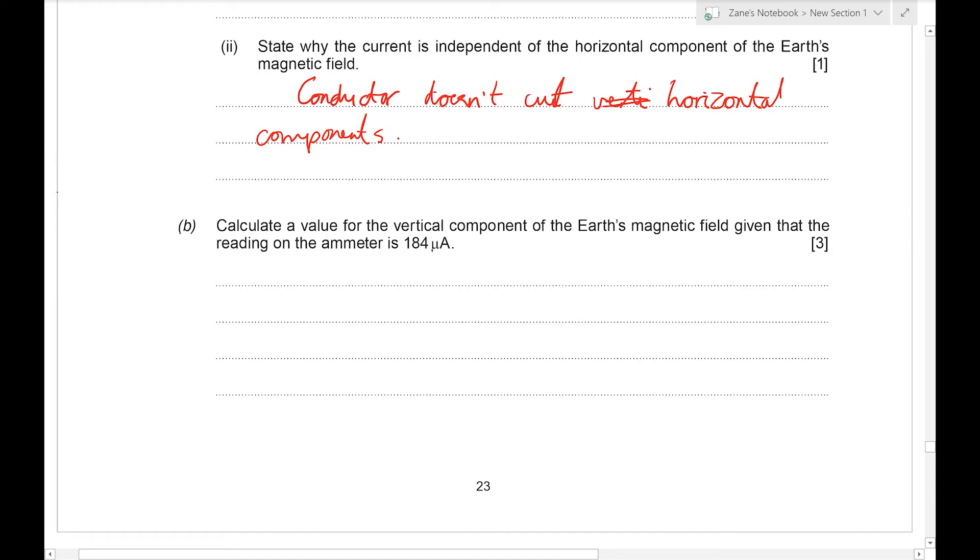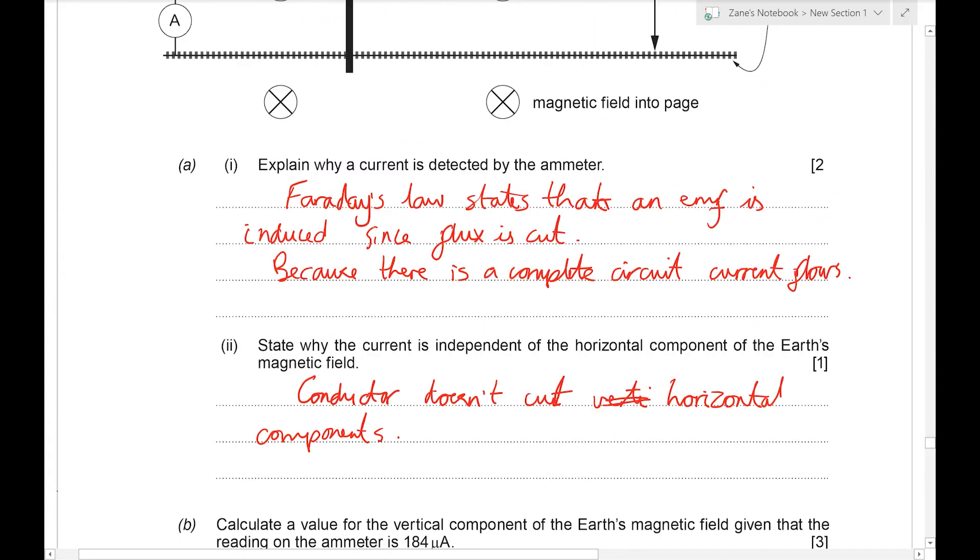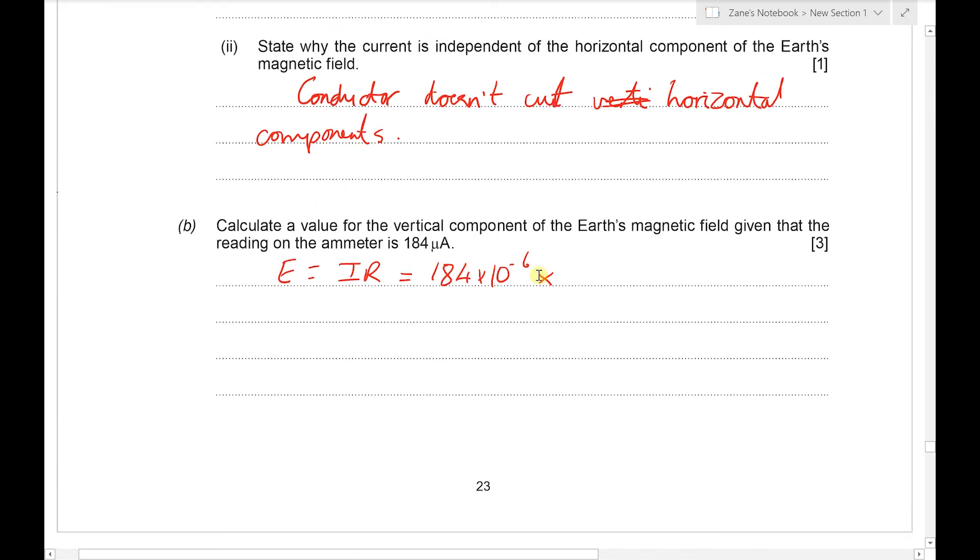Next we've got to calculate a value for the vertical component of the Earth's magnetic field given that the reading on the ammeter is 184 microamps. Well, we can calculate the size of the induced EMF using I times R. We've got 184 times 10 to the minus 6 for the current and the resistance is 26 ohms. Putting those into the calculator we end up with 4.8 times 10 to the minus 3 volts.